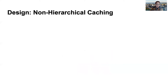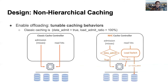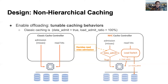To realize our ideas, we present the design of non-hierarchical caching. As shown in the figure, NHC enables offloading by making caching behaviors tunable. Unlike classic caching which behaves statically according to its policies, NHC makes these decision points dynamic. First, NHC introduces a data admit flag into the cache controller — this flag decides at any moment whether NHC will admit read-miss data into the cache device, and is tunable at runtime. Second, NHC introduces a load switch with a parameter called load-admitted ratio, ranging from 0% to 100%, which decides how many read hits are directed to the cache device and how many are offloaded to the capacity device.